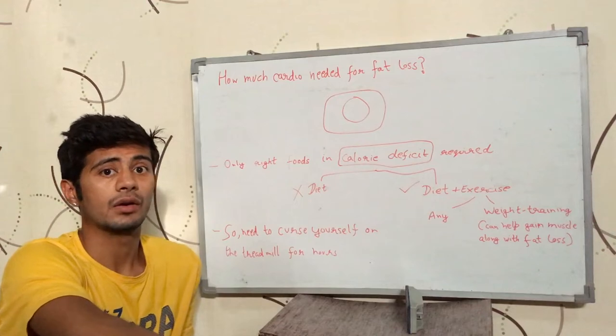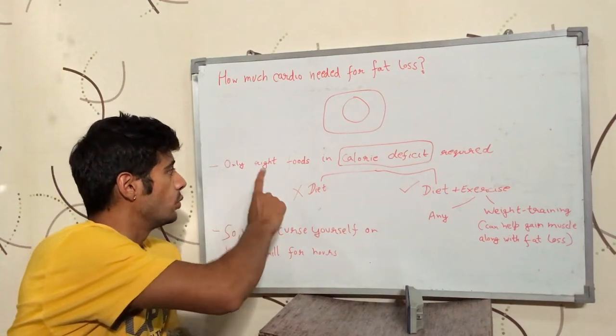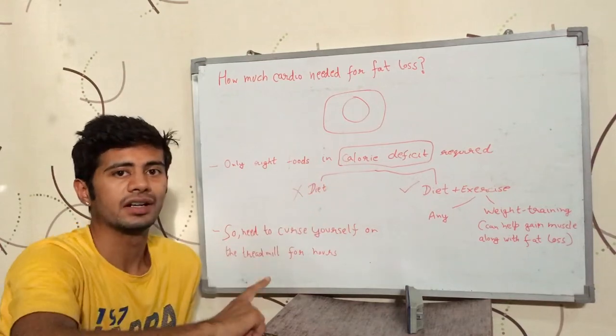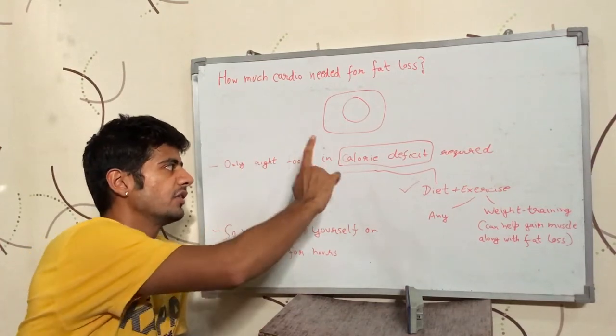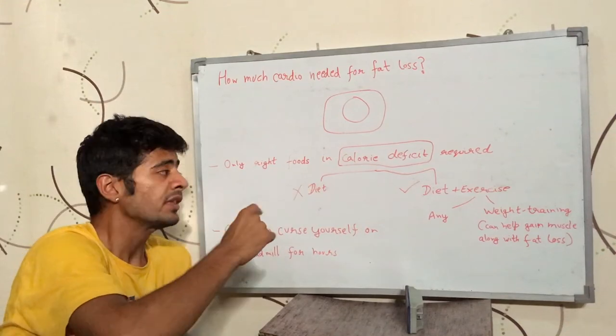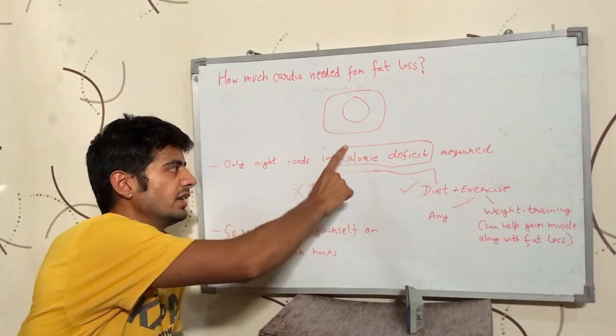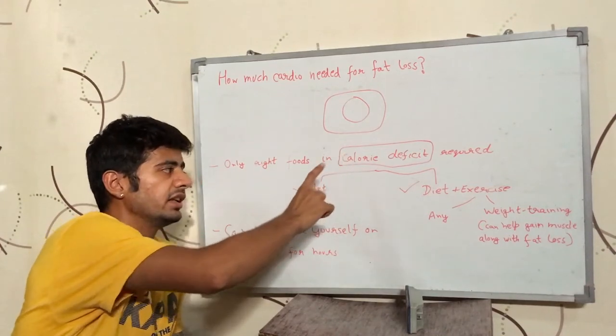Okay, if we do not do cardio, then how do we lose weight? So, we lose weight when we are in calorie deficit. I have talked about what calorie deficit is in my previous videos. You can go and check them out. We lose weight in calorie deficit and we lose fat in calorie deficit when we eat the right foods.